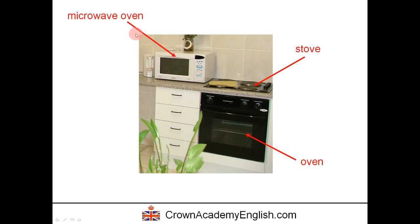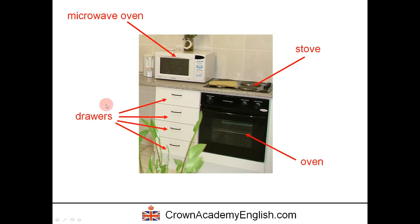This is a special type of oven called a microwave oven. A microwave oven cooks food very quickly. And finally, on this photograph, we have four drawers: a top drawer, the second drawer, the third drawer, and the bottom drawer.